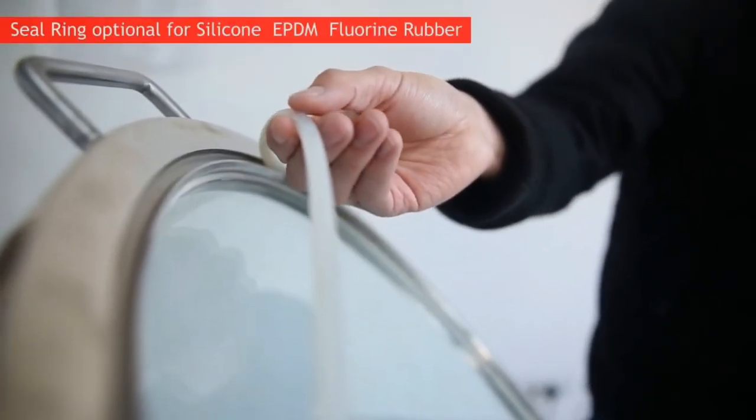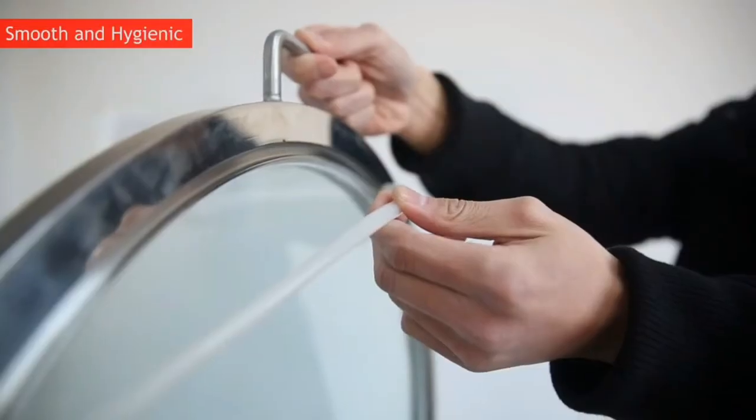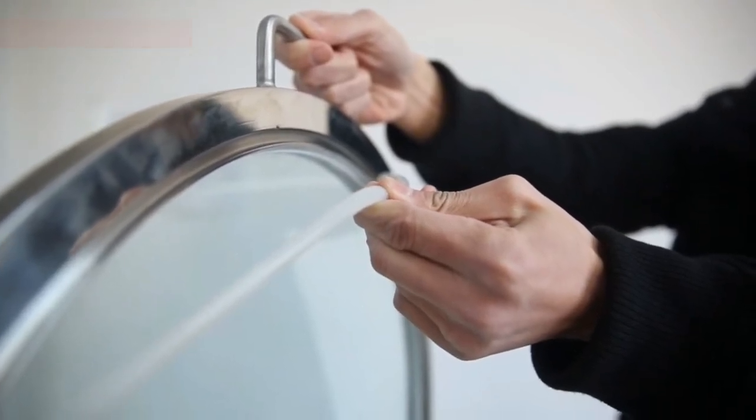The manhole seal ring options include silicon, EPDM, fluorine rubber or other materials. Smooth, hygienic, cover and collar fitting tightly to prevent stains outflow.